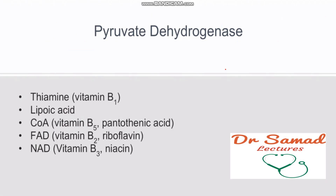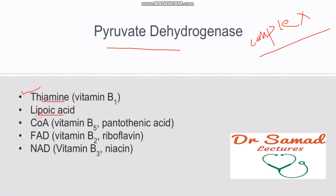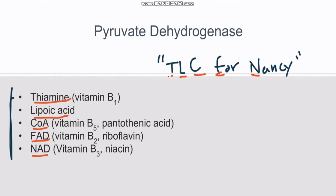Pyruvate dehydrogenase is not a single enzyme — it is a multi-enzyme complex. It requires several cofactors: Thiamine, Lipoic Acid, Coenzyme A, FAD, and NAD. You can remember these with the mnemonic TLC for NAD — T for Thiamine, L for Lipoic Acid, Co for Coenzyme A, F for FAD, and N for NAD.